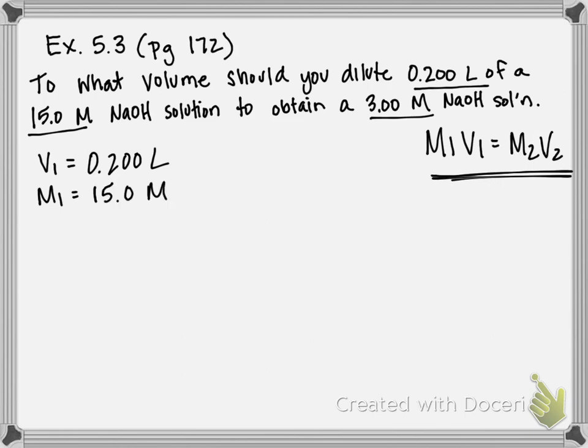So this is our concentrated solution, and it even states it in the problem that we are diluting. And we're trying to obtain a 3 molar solution. So our M2 is 3.00 molar. So the only number that we don't have that we're ultimately going to be solving for is V2.